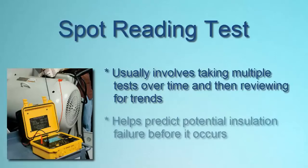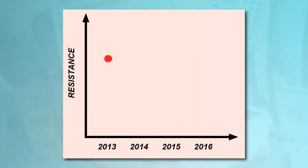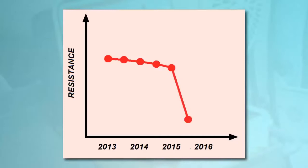This comparison can help predict a potential insulation failure in time to take corrective action. For example, suppose you perform a spot test every six months. Plotting the results on a graph, you observe a slow and gradual downward trend, as would be expected by the normal aging of insulation. However, if your latest measurement reveals a sudden drop in resistance, this is likely an indication that the insulation has begun to deteriorate at an accelerated rate. To address this, you can schedule downtime for the system and take appropriate measures such as cleaning, upgrading, or replacing the insulation.